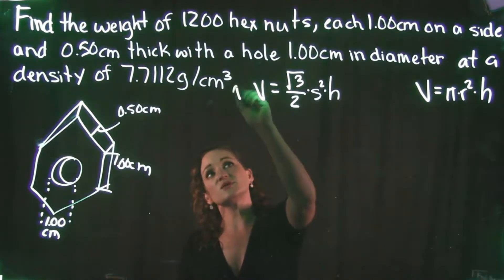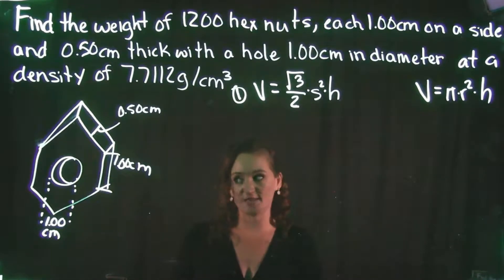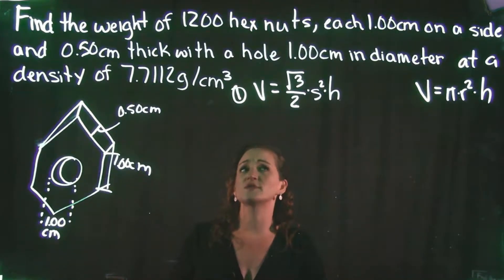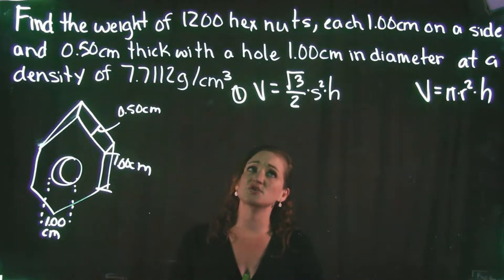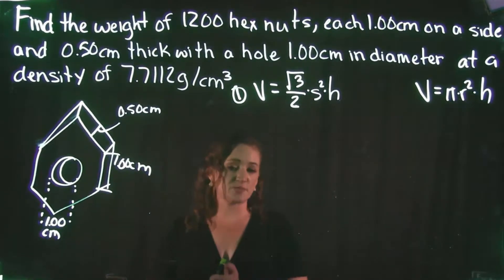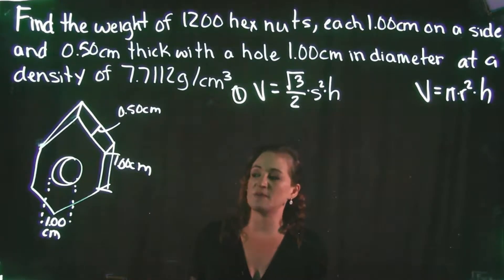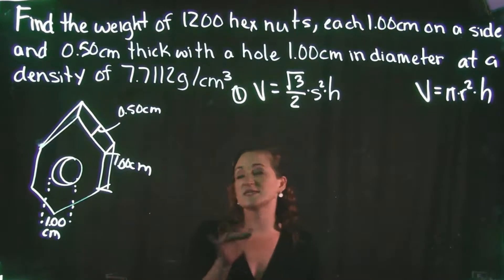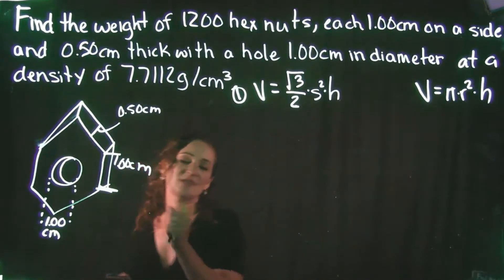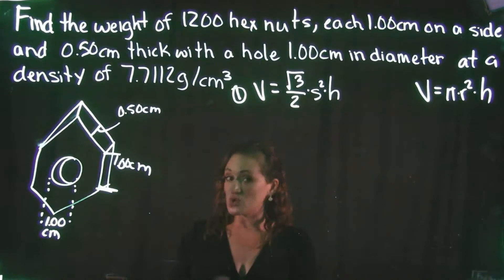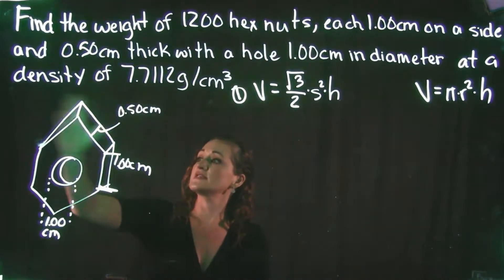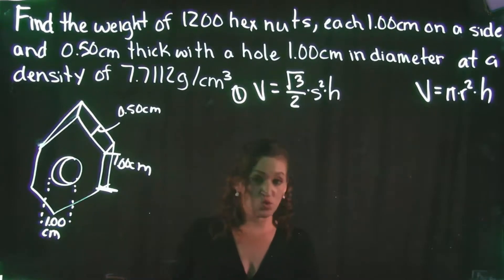The first step is to find the volume of the hexagonal prism. The formula is the square root of 3 over 2, times side squared, times the height. The side of this hex nut is 1 centimeter, and since all six sides of a hexagon are equal, every side is 1 centimeter.